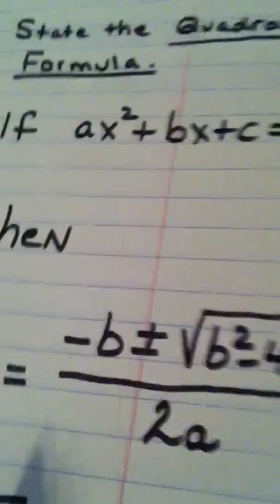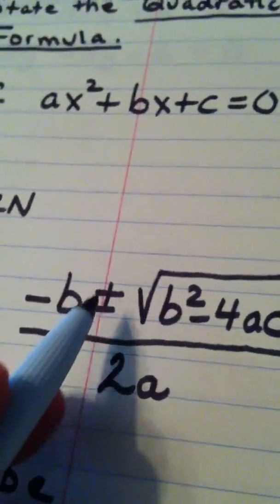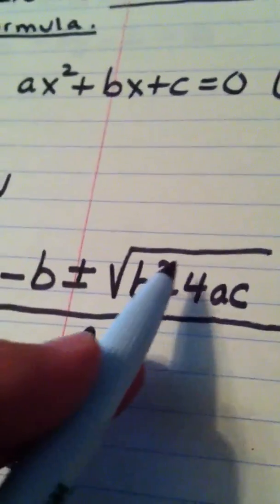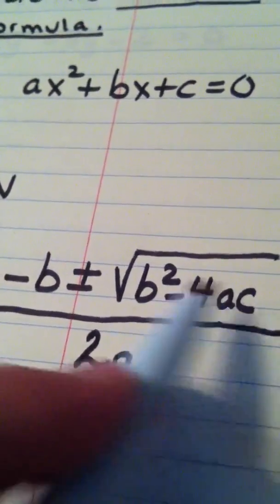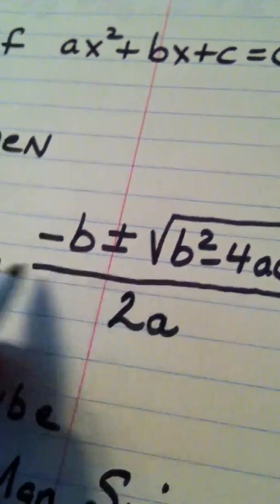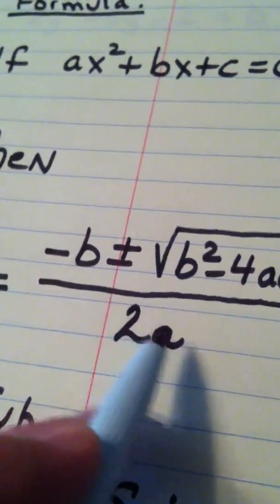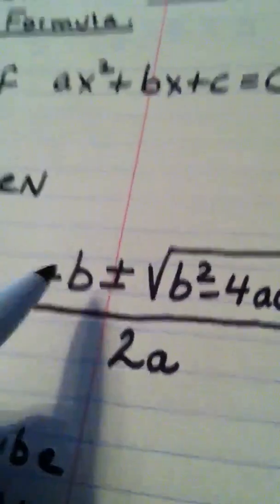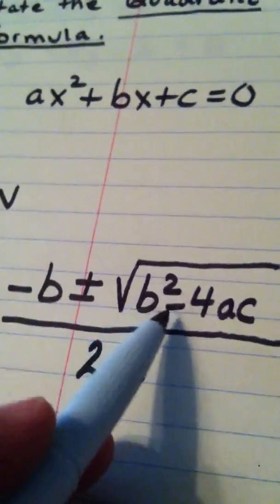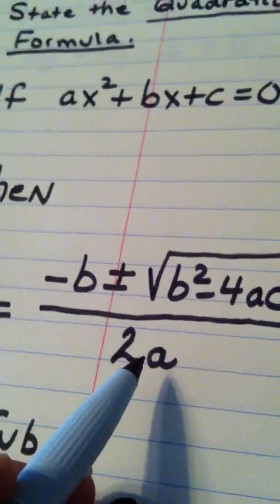To the tune of Frère Jacques: Opposite of b, opposite of b, plus or minus square root, plus or minus square root, b squared minus 4ac, b squared minus 4ac, all over 2a, all over 2a. Then we pick up the pace and repeat it faster.